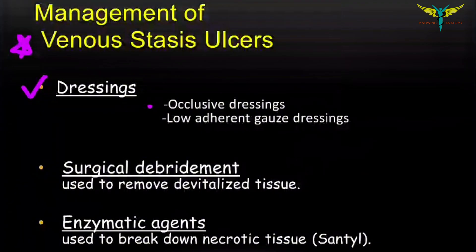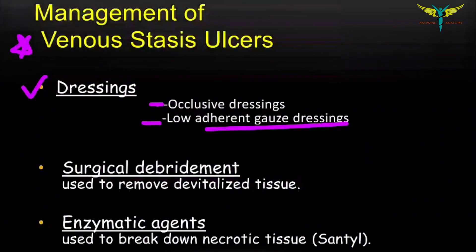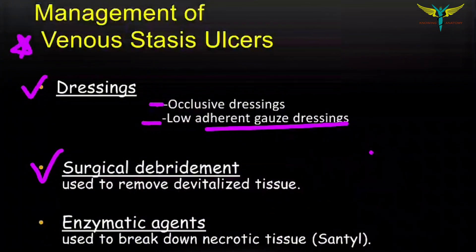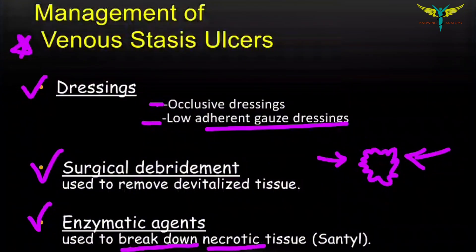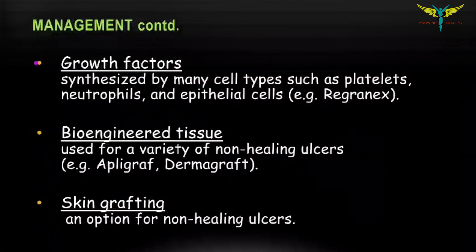Coming to the management, the first step is dressings. We must follow occlusal dressings and low-adherent gauze dressings. In larger venous ulcers, surgical debridement is a must — the devitalized tissue around the ulcer is removed, which makes healing faster.